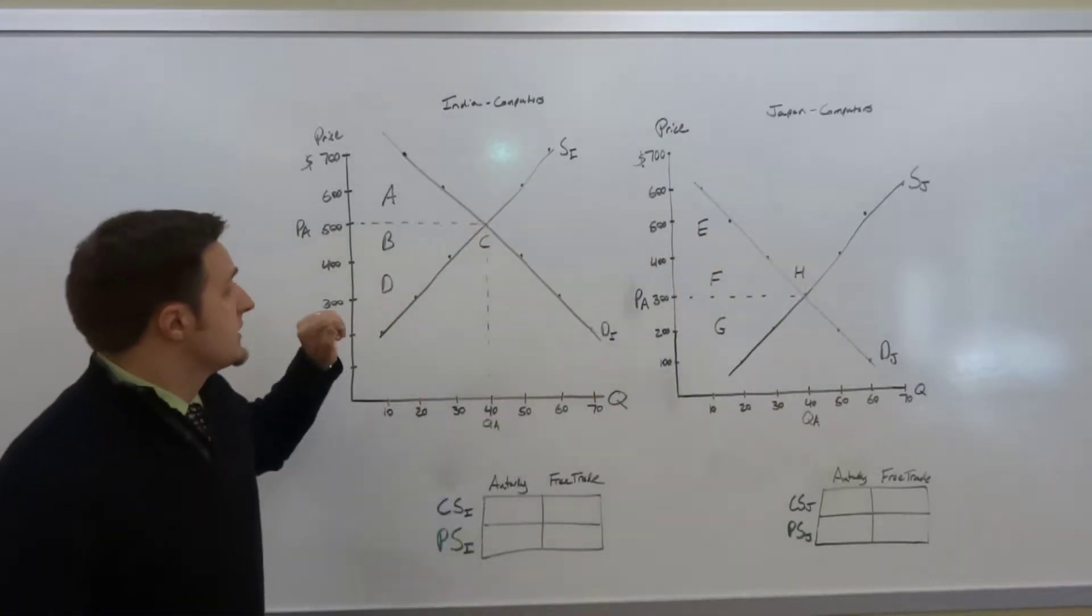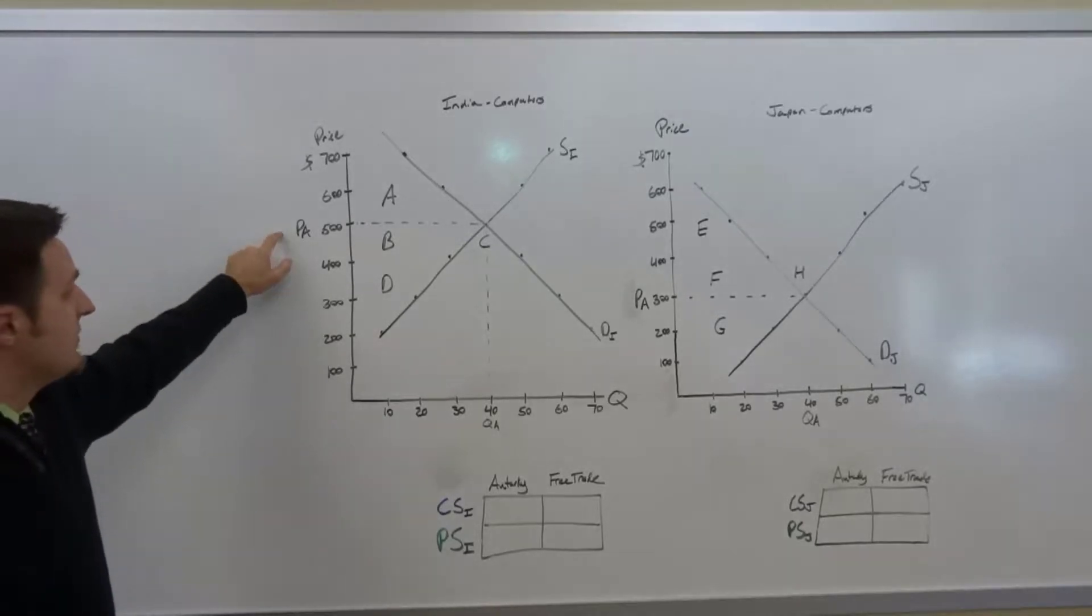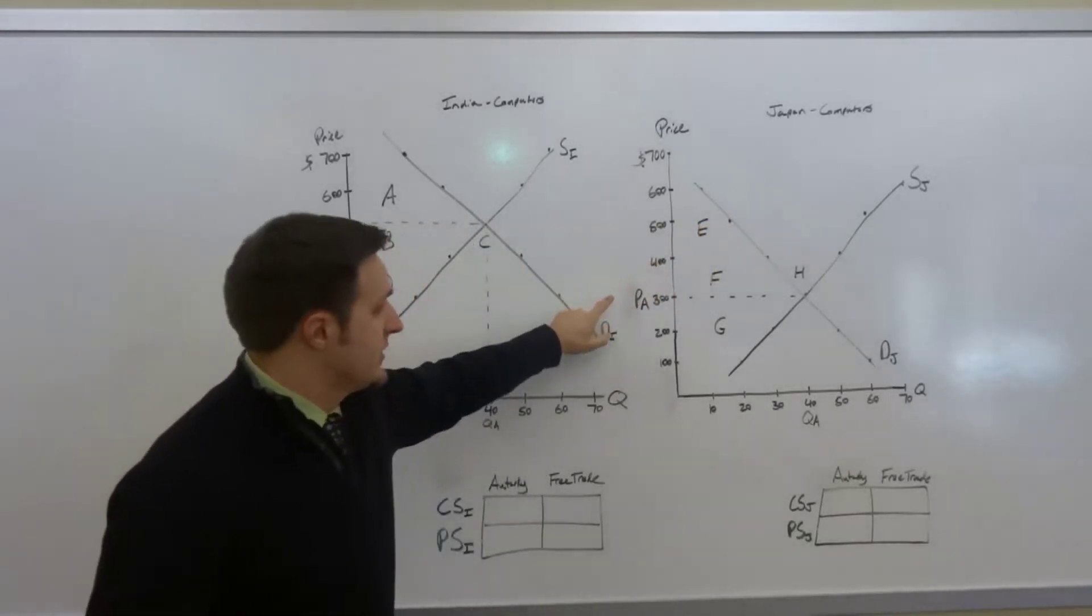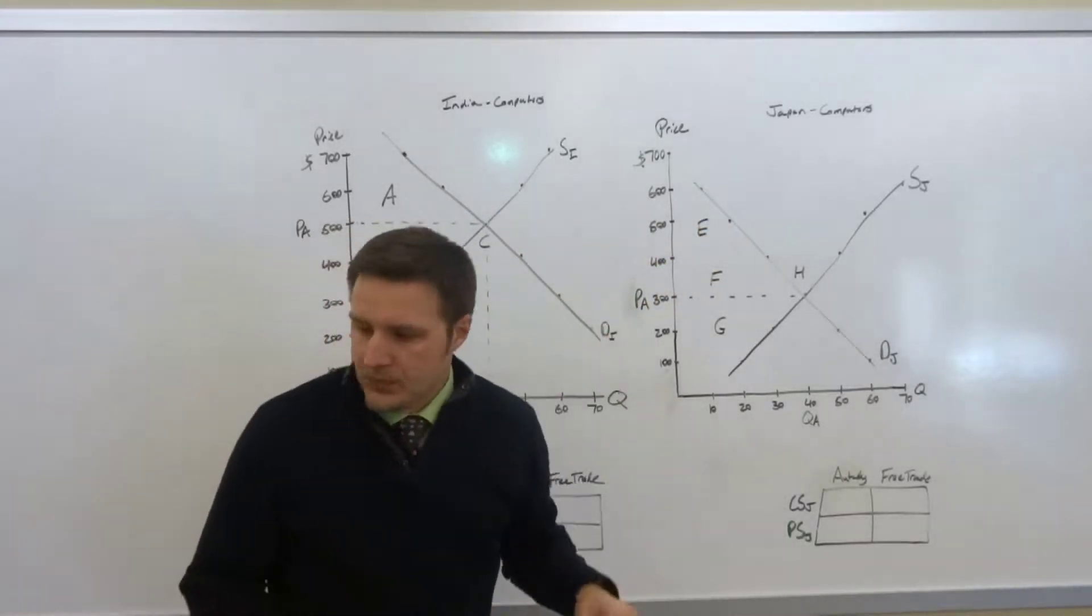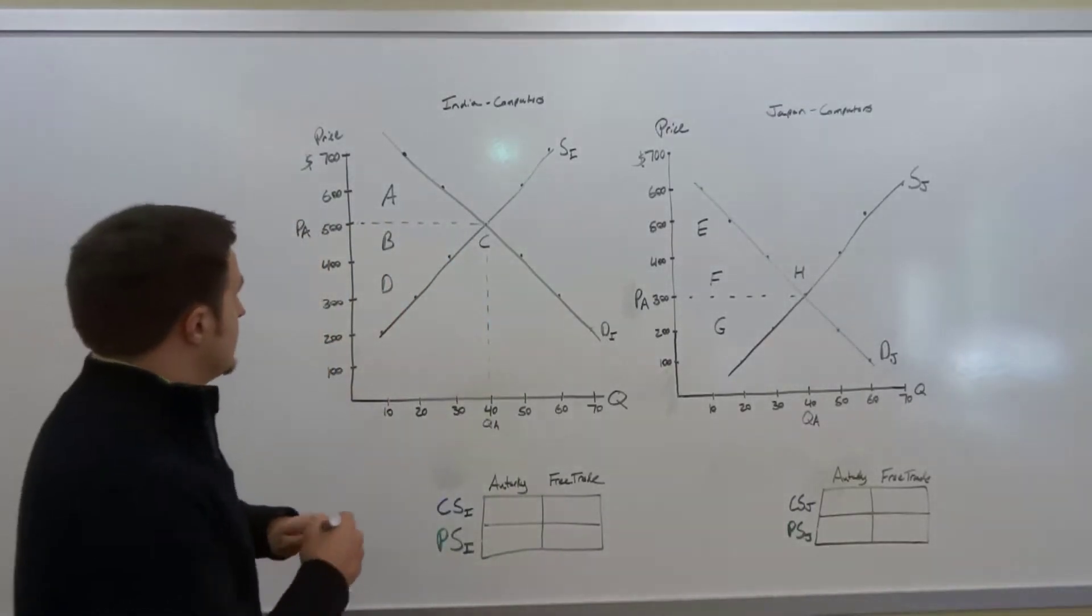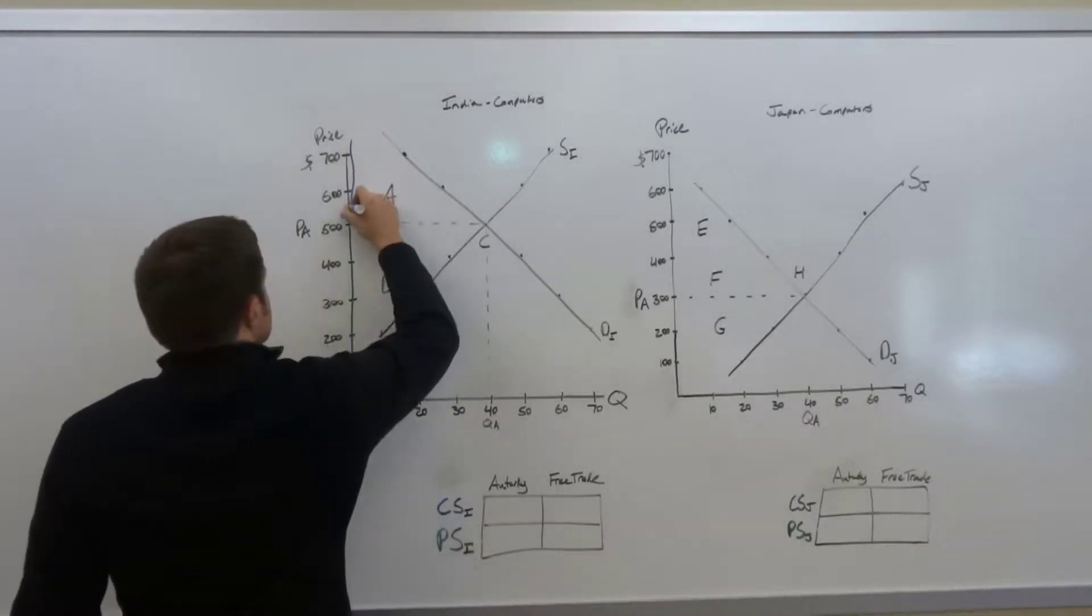In India, you can see that the price domestically without trade, or autarky, is $500 for a computer. In Japan, the autarky or no trade price is $300. What I want to first do is identify the areas of consumer and producer surplus under an autarky situation, and again autarky simply means no trade.